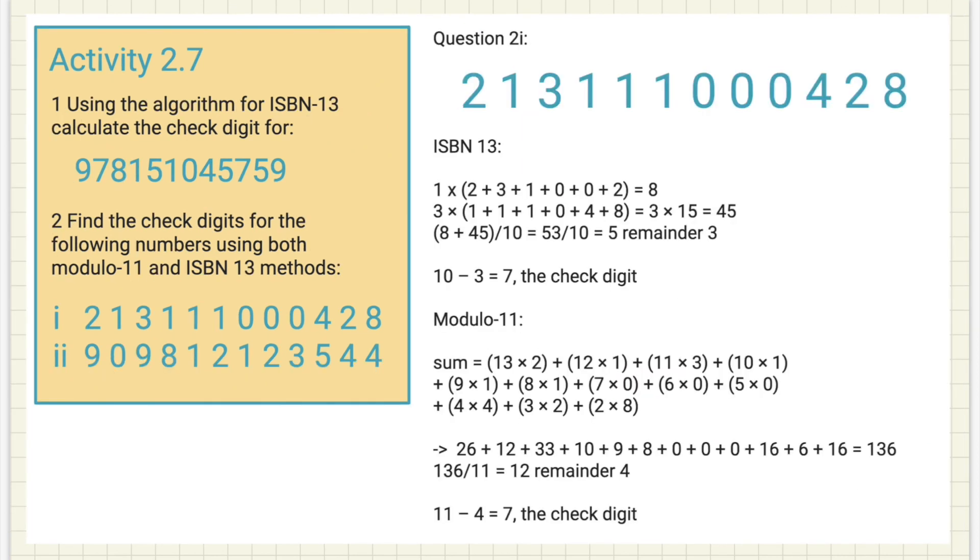So for this one, number two, I'm going to do the same thing again, ISBN-13, but this time I'm also going to do modulo-11, and I'm going to be working on this number here. As before, I take the odd numbers, which in this case is 2, 3, 1, 0, 0, and 2. Add them all together, times them by one, and I get 8.